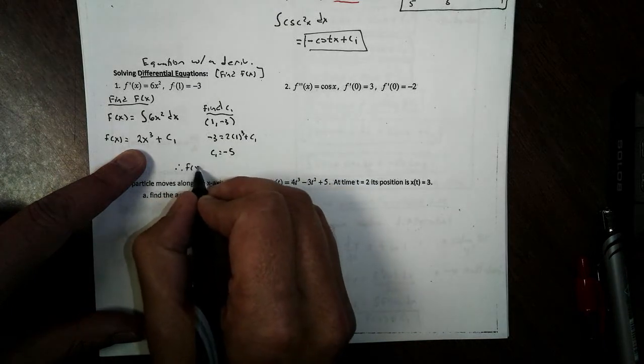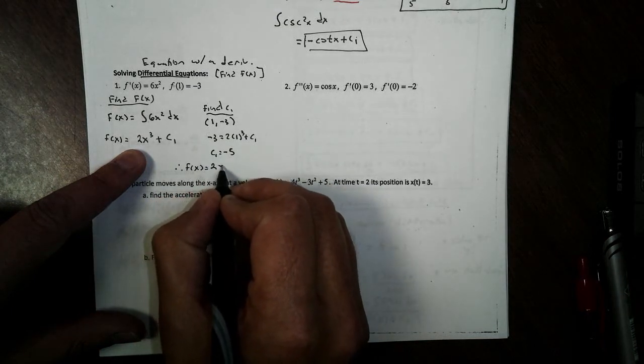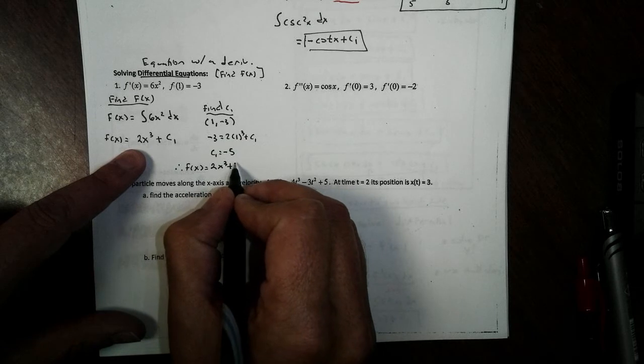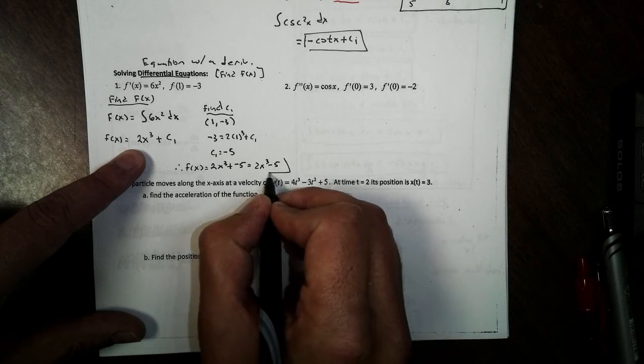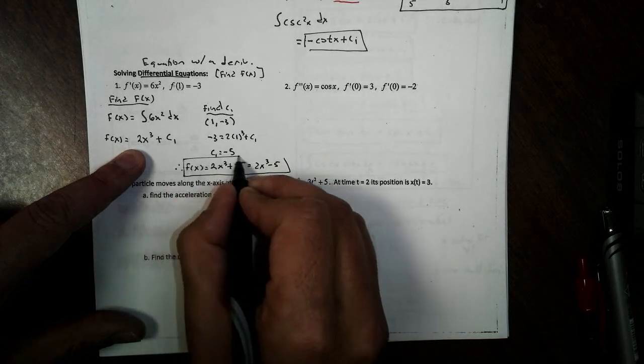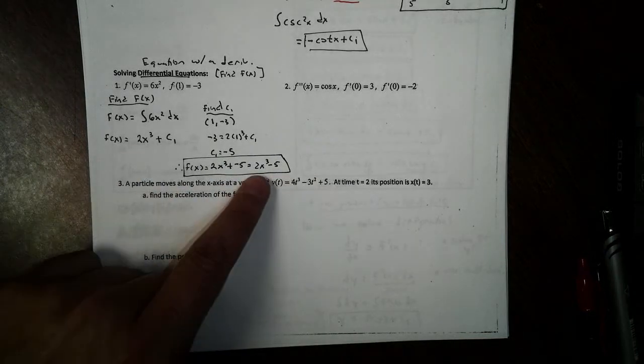Therefore, our function now becomes 2x cubed plus a negative 5, or 2x cubed minus 5. And there is our original function.